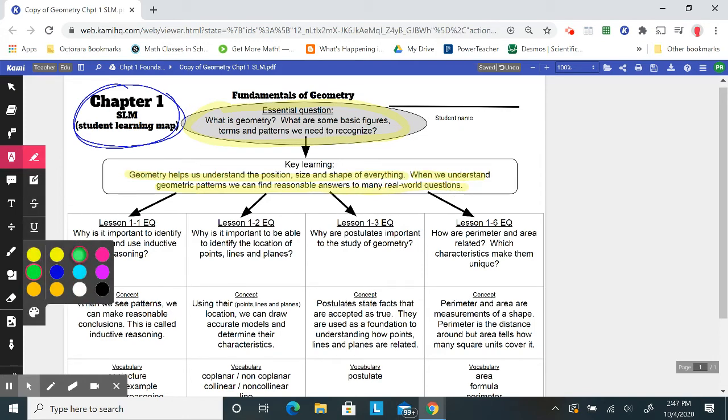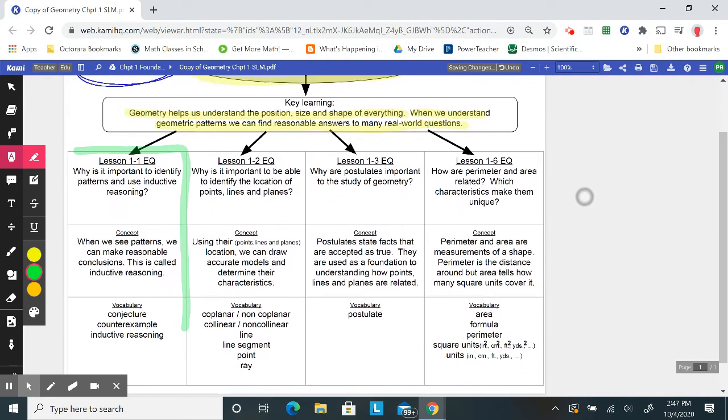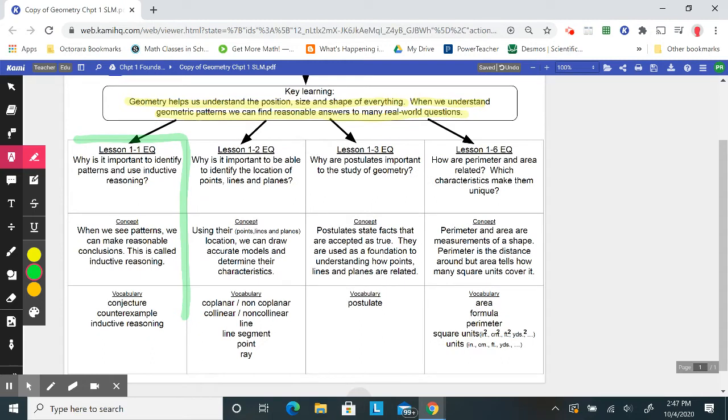Our first lesson, if you recall, is lesson 1.1. Why is it important to identify patterns and use inductive reasoning? The answer is when we see patterns, we can make reasonable conclusions. This is called inductive reasoning. Our vocabulary includes conjecture, counterexample, and inductive reasoning.